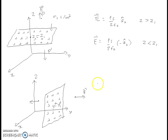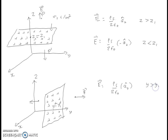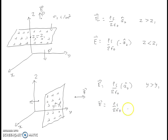The electric field is given by rho_s by 2 epsilon_0 in the positive ay direction for y greater than y1 — points to the right of the y equals y1 plane. For points to the left, where y is less than y1, E equals rho_s by 2 epsilon_0 in the minus ay direction.